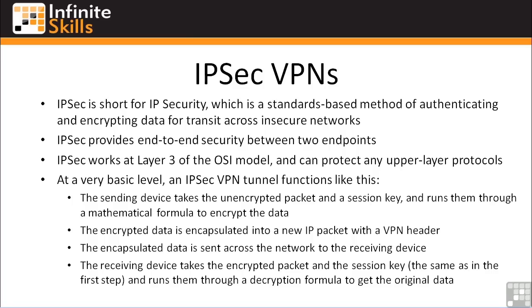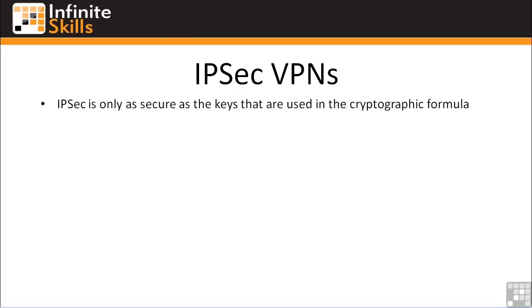If the encryption keys work and everything is configured correctly, the unencrypted data is exactly the same as the original data. IPsec is only as secure as the keys used in this cryptographic formula. If those keys are compromised, your VPN tunnel is worthless — anyone can grab the data and the keys, run them through the known cryptographic formula built into all IPsec devices, and decrypt your data at any point.